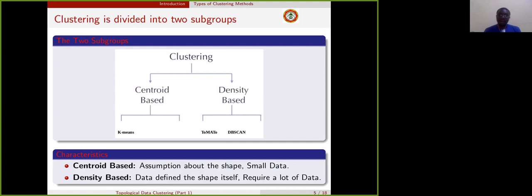On the other side, we have density-based clustering. In this density-based clustering, the data defines the shape itself and this requires a lot of data. We don't have any assumption at the beginning in centroid-based clustering. Some examples of density-based clustering are DBSCAN and tomato, which is going to be the algorithm of our interest in this talk.